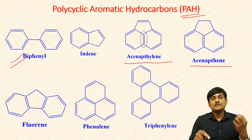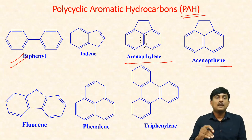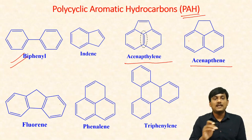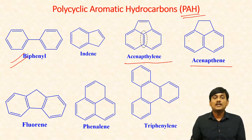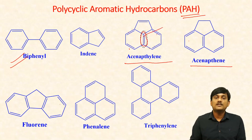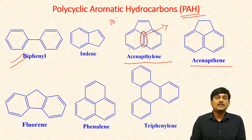If you observe any compound which has a benzene ring, that compound should be aromatic irrespective of the number of pi electrons. In acenaphthalene, the pi bonds — one, two, three, four, five — five pi bonds are in delocalization. This other pi bond is not participated in the delocalization and is not counted. So how many pi electrons are there? 10 pi electrons are there. According to Hückel's rule, this one is aromatic.